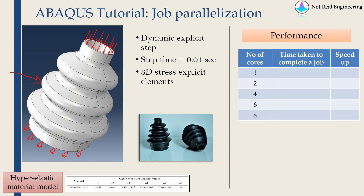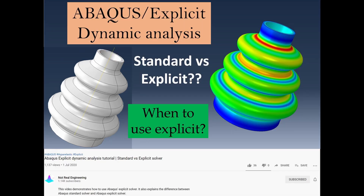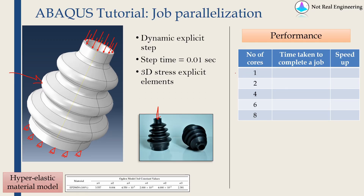Now let's look at the example I'm going to run. This is a 3D part made from rubber, and we are going to fix the bottom surface and apply a displacement boundary condition on the top surface in a compressive direction. I've solved this example in a separate video, so if you want to see how to build it, you can check that. We will run the same example first with one processor, then with 2 and up to 8 processors, to see if the time decreases.